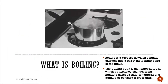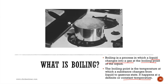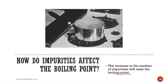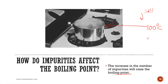Boiling is a process where liquid changes to gas at the boiling point, and it happens at a constant temperature. Impurities also affect the boiling point — they increase it. For example, if water boils at 100°C, adding salt may raise the boiling point to 101 or 102°C.